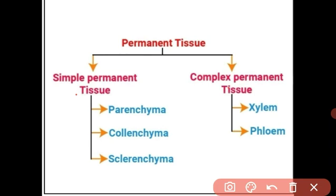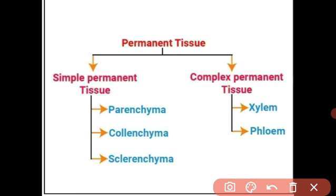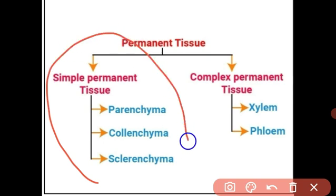Do you understand? In simple permanent tissue, all cells are of one type — same structure, same function. In complex permanent tissue, there are more than one different types of cells, each with a different structure performing different work. Today in this video, we are going to study only simple permanent tissue.